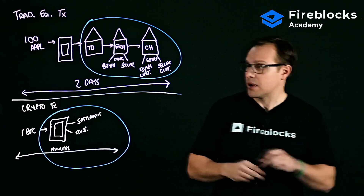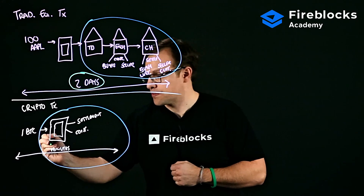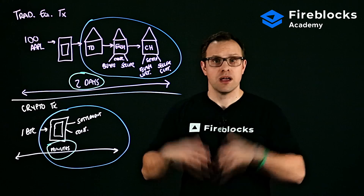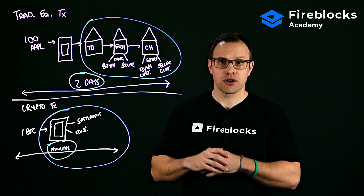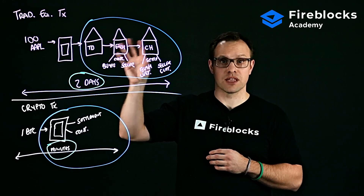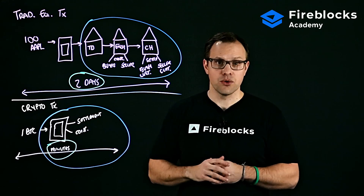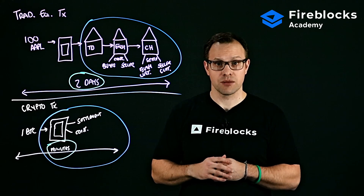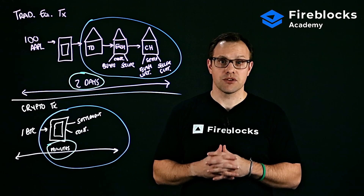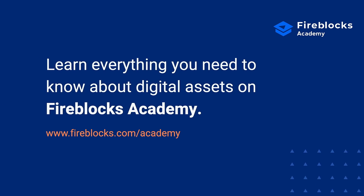The other thing I want to highlight is that the settlement time for a traditional equities trade can be up to two days, while in crypto you could settle a transaction in minutes. From a high-level summary standpoint, in traditional financial markets there are typically many intermediaries involved in getting transactions done. In crypto, things are much more efficient — few intermediaries if any — which leads to much faster settlement times and a better potential customer experience. Thanks so much for joining today, and for more educational content please join us at Fireblocks Academy.